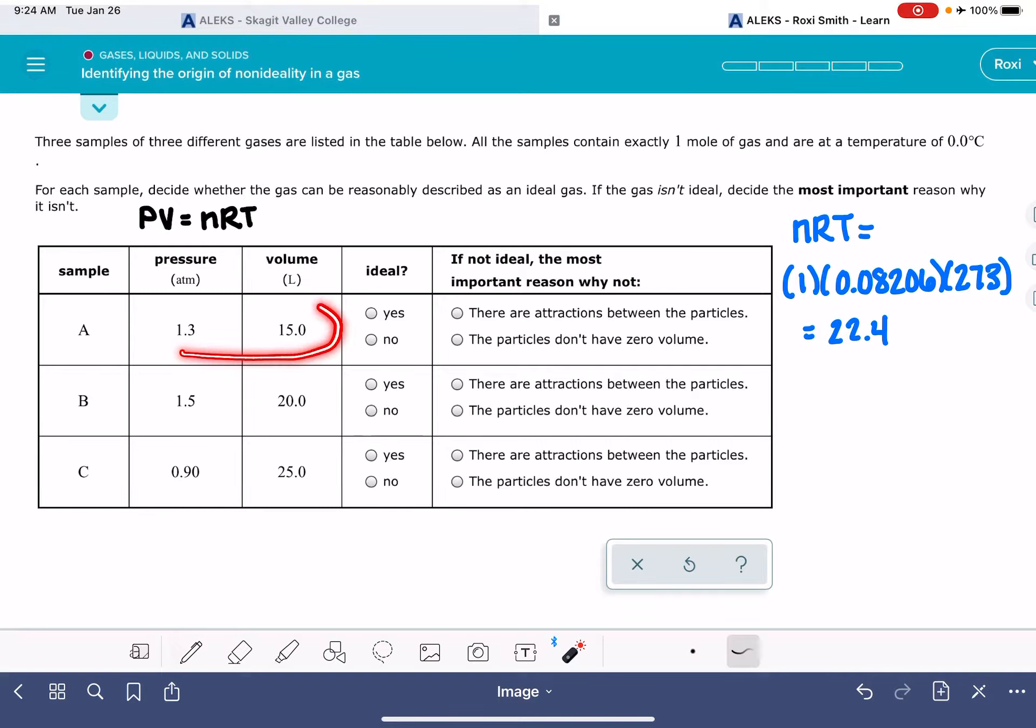And then what I'm going to do is take each one of these pressure-volume combinations, and I'm just going to multiply them by each other, 1.3 times 15. And if the gas is ideal, it's going to work out to be 22.4. So for my first gas, I'm going to make a note down here. For gas sample A, P times V is 1.3 times 15, which is 19.5, which is not equal to 22.4. So that means that gas A is not an ideal gas. If it was an ideal gas, this would be 22.4.